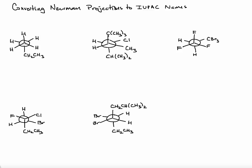In this first problem, we're looking down the axis of a carbon-carbon bond. The front carbon has three hydrogens as the substituents. The rear carbon has two hydrogens and an ethyl group as the substituents. If we count the number of carbons in the chain, we have one for the front, two for the rear, then three and four. So this molecule is going to be butane.